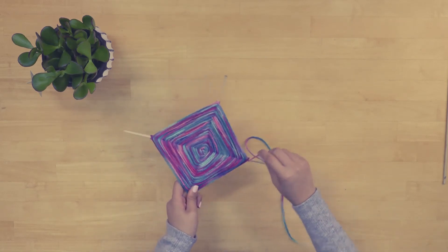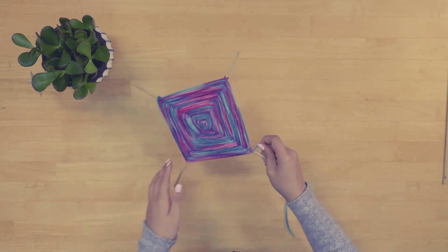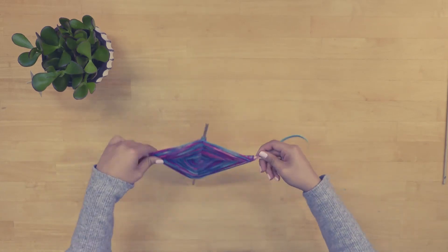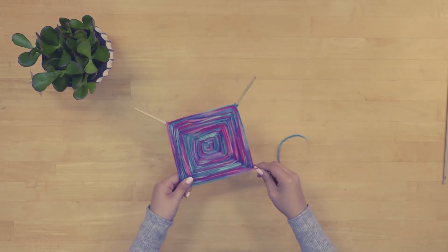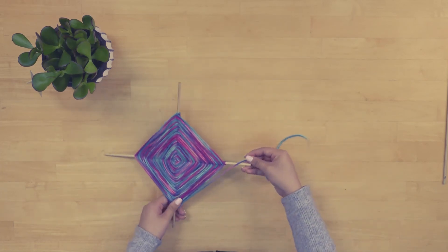You will notice that after a while of wrapping, you have created a beautiful diamond-shaped pattern. At the end of the wrapping, cut your yarn and tie it up on the dowel that you are on.